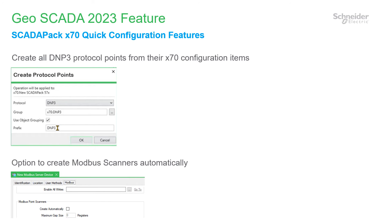We've added some more quick configuration features for ScadaPack 2. For example, you can create all of the protocol points for an RTU with a single action — choose where to create them and how to structure their names. There's also an option which enables Modbus scanners to be created automatically, which can be simpler than using Remote Connect to define each scanner and their relationship to Modbus points.